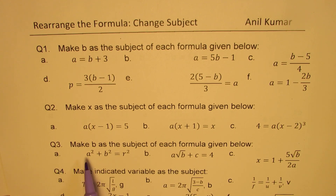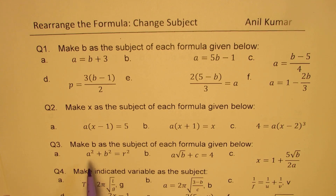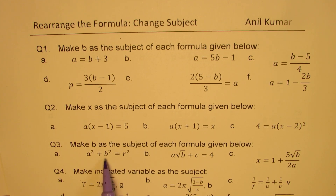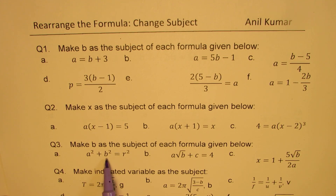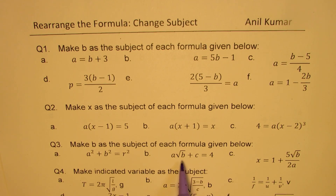Question number three: make B as the subject of each formula given below. When you have A square plus B square equals to R square and you want to make B the subject, you will take A square to the other side. When you do square root — which is the inverse operation of square — you can isolate B. But remember, you have to put plus and minus when you square root. Whenever B is in square root, you need to square to get the value of B.